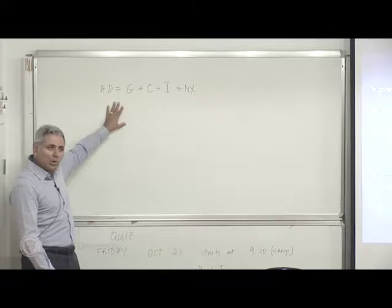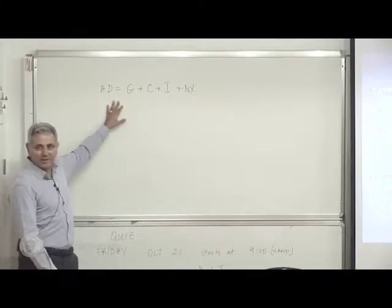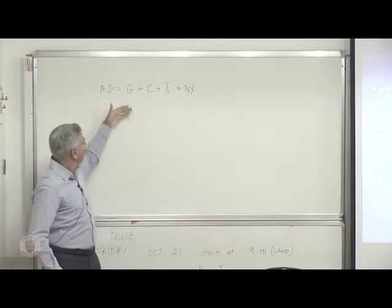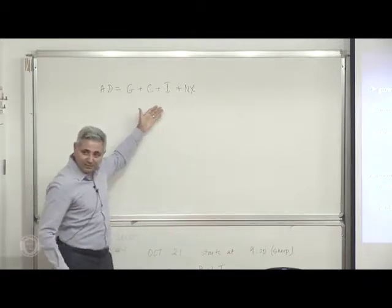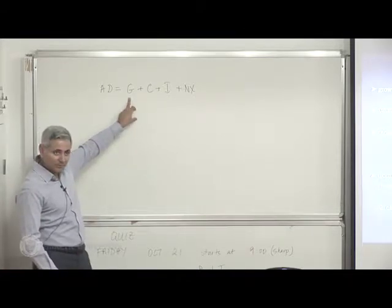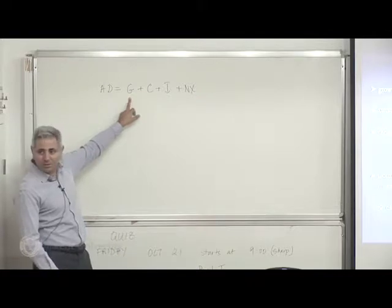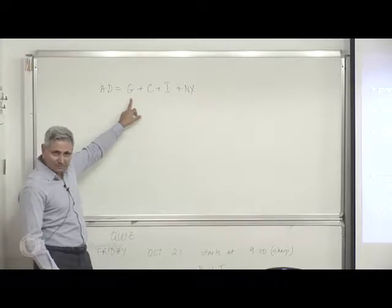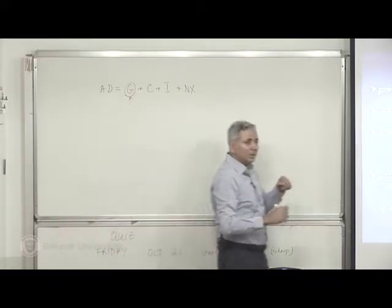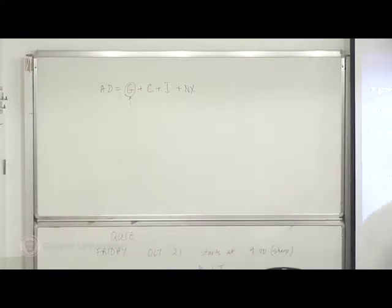When you look at this equation, aggregate demand or aggregate expenditure is a function of all these. The role of government here is of utmost importance. In a wartime economy, the government spends a lot on, for example, ammunition. So military expenditures increase phenomenally.